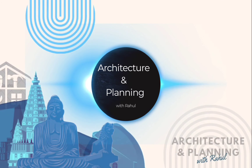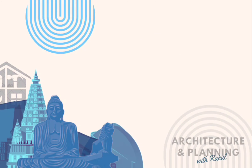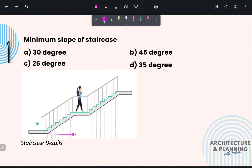I am your host Rahul and you're watching Architecture and Planning with Rahul. Let's begin with today's first question. The minimum slope of staircase — as per standard, this angle of inclination should be at least 26 degrees and should not exceed 45 degrees. Therefore, the correct answer is option C: 26 degrees. This is the minimum slope required and 45 degrees is the maximum slope required.